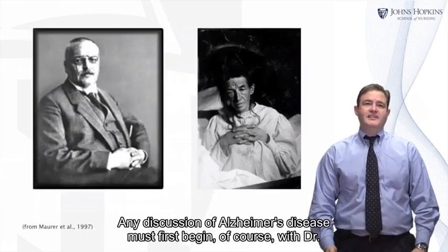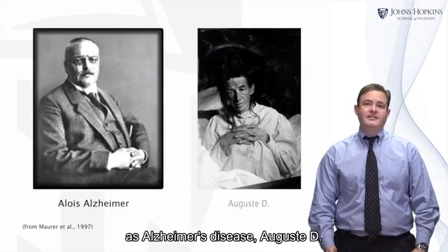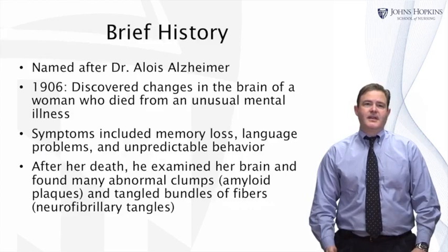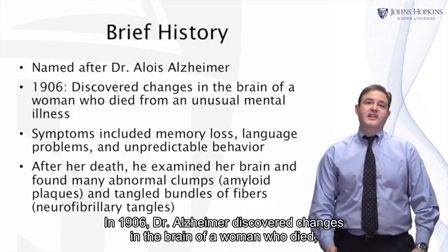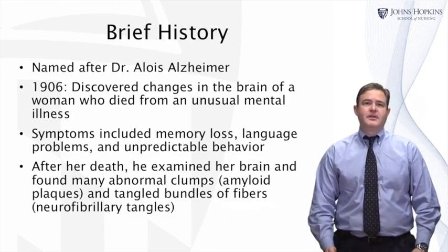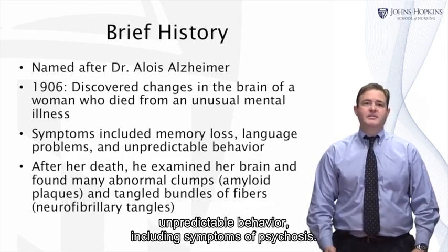Any discussion of Alzheimer's disease must first begin, of course, with Dr. Alois Alzheimer, as well as the first patient he described with what we now know as Alzheimer's disease, August D. In 1906, Dr. Alzheimer discovered changes in the brain of a woman who died from what was felt to be at the time an unusual mental illness. Her symptoms included loss of memory, difficulties with language, and unpredictable behavior, including symptoms of psychosis.